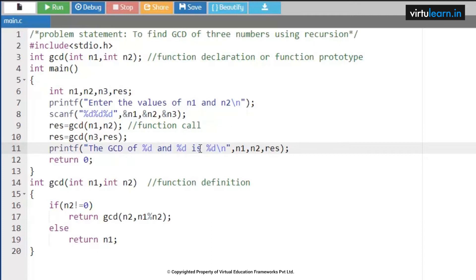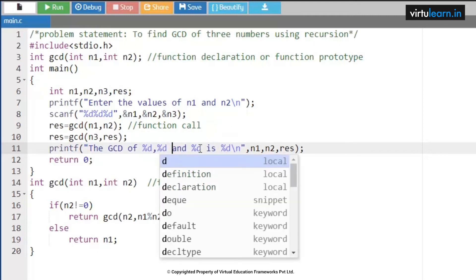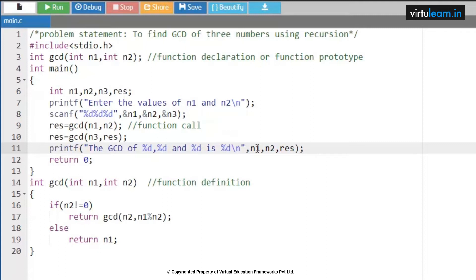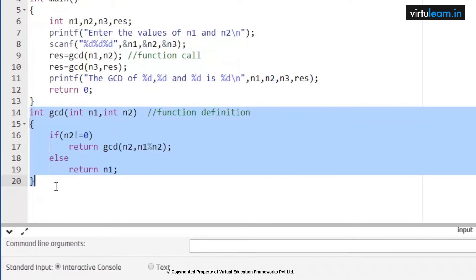So this is how we can find the GCD of three numbers. That is GCD of percent d comma percent d and percent d is percent d. Here what should I write: n1, n2, and n3 equal to result. Rest of all the function call is same. According to the advantage of functions, a function can be written once and called n number of times.